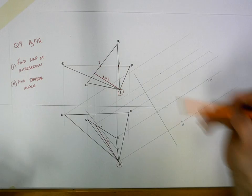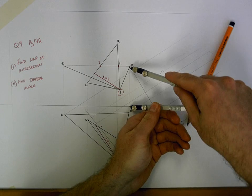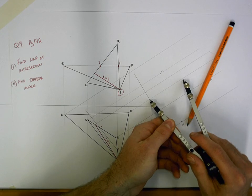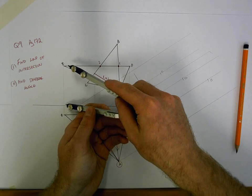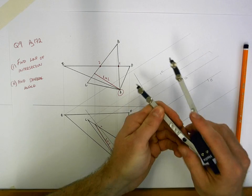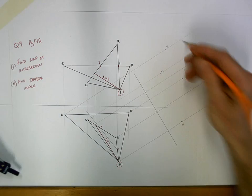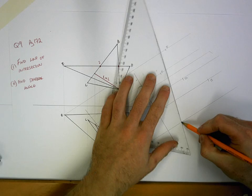And the whole purpose of this is to get a true length of the line of intersection. Same way if you had a pencil in front of you and you wanted to see the true length of it, well, you'd look straight at it. You'd make a 90 degree angle to the pencil. So that's just what you're doing here.